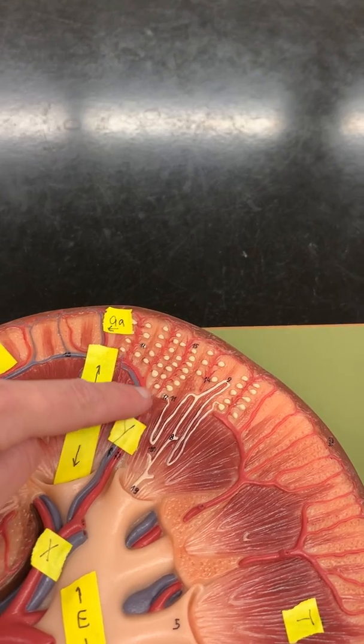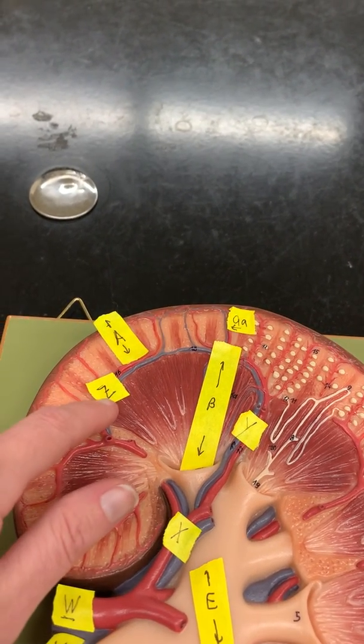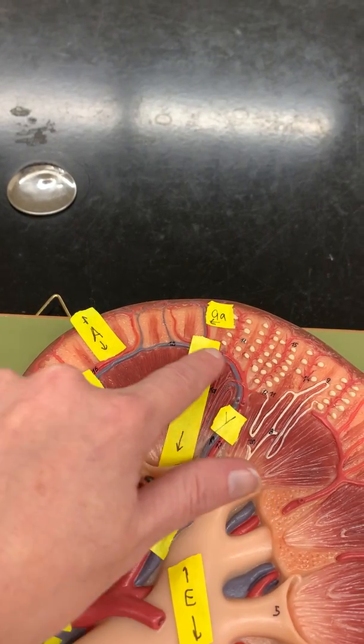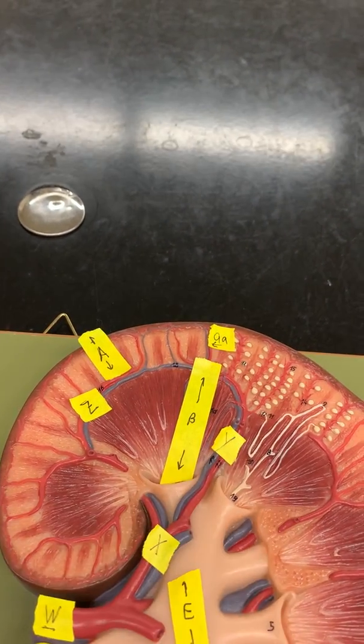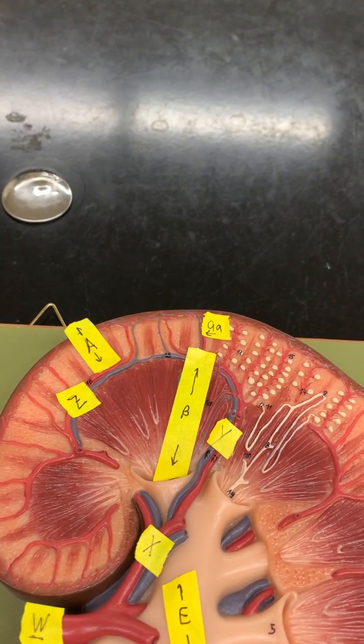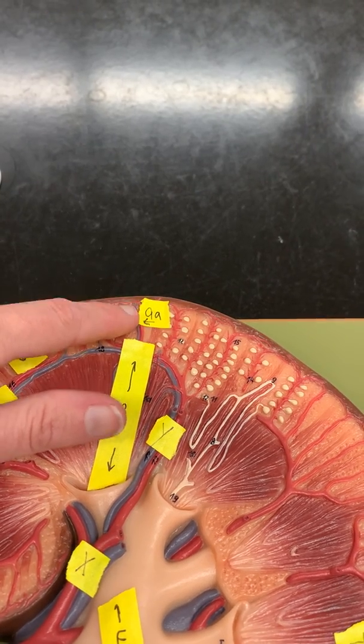From there, go over here to Z. This makes an arch. So the arcuate makes an arch. And then lastly, you have the interlobular arteries and veins. And that's these tiny ones right up here.